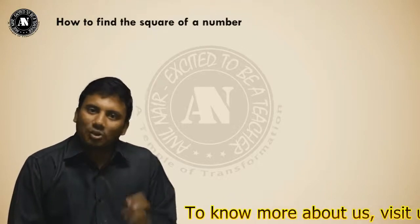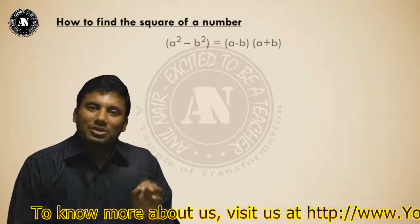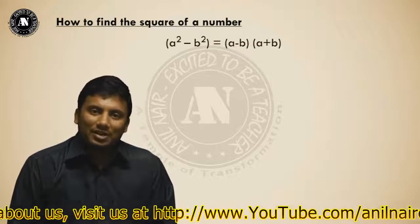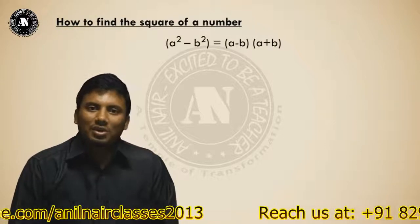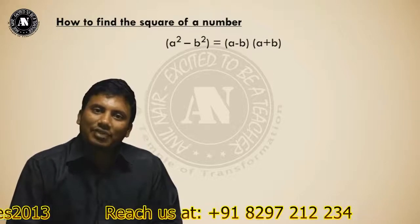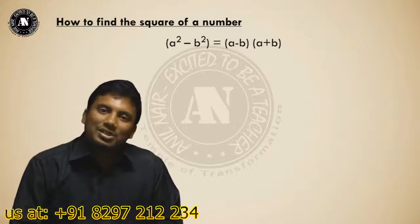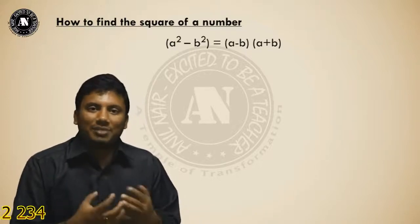Most of the students know the formula a² - b² = (a-b)(a+b). But unfortunately, many of the students do not know that actually this is used to find the square of a number. How this is used to find the square of a number? Let us explore.